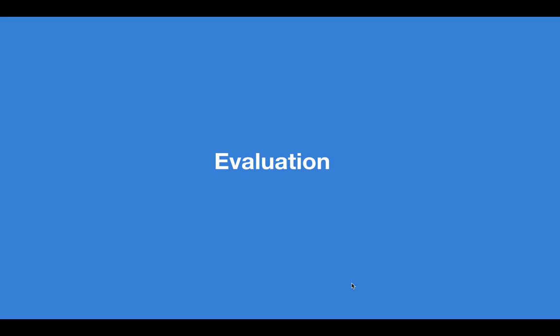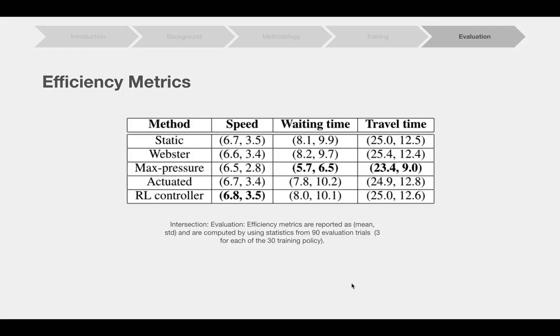The next step is we evaluate each of the 30 policies obtained during training. For each policy, we perform three rollouts for one whole simulation day. The three most common metrics to evaluate ATSC systems are speed, waiting time, and travel time. In this table,